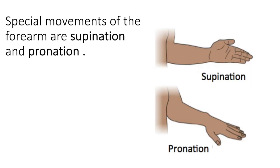Special movements of the forearm are supination and pronation. Pronation is when, from standard anatomical position, you roll your forearm so that your palms face posteriorly. Supination is bringing your palms back to standard anatomical position.